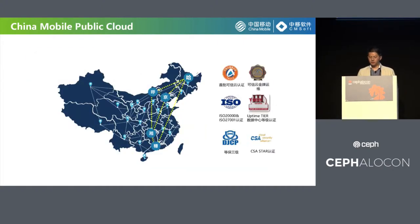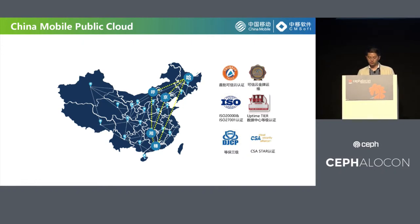China Mobile is building a unified public service cloud platform, internally supporting the group's product cloudization to decrease cost and increase efficiency, and externally serving government, corporate, and internet customers. We use Ceph as the storage solution for China Mobile Public Cloud. Over 30 block storage clusters are running to provide cloud disk service for OpenStack, with a total block storage capacity of over 40 PB. Besides, there are four object storage clusters providing object storage service, with a total capacity of over 15 PB. These four clusters are deployed based on Ceph's multi-site feature, with one master zone group and three slave zone groups, and metadata is synced between these clusters.